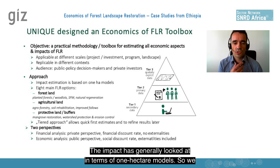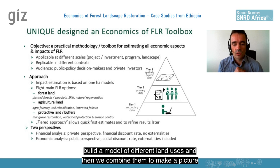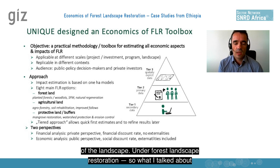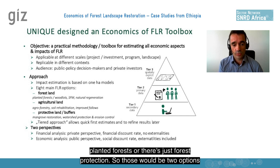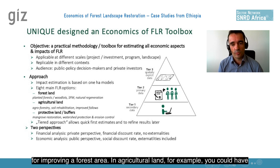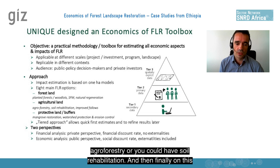The impact is generally looked at in terms of one-hectare models. We build a model of different land uses and then combine them to make a picture of the landscape. Under forest landscape restoration, we've got forest land — for example, under forests there are planted forests or forest protection, which would be two options for improving a forest area. In agricultural land, for example, you can have agroforestry or soil rehabilitation.